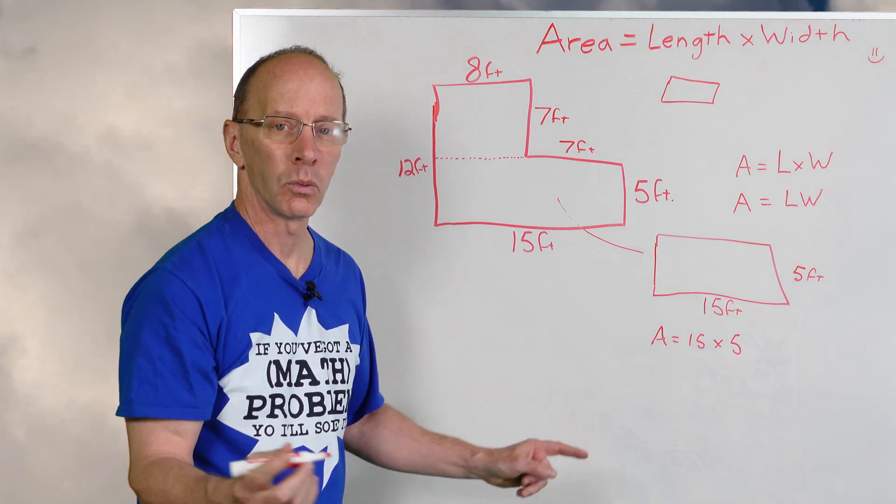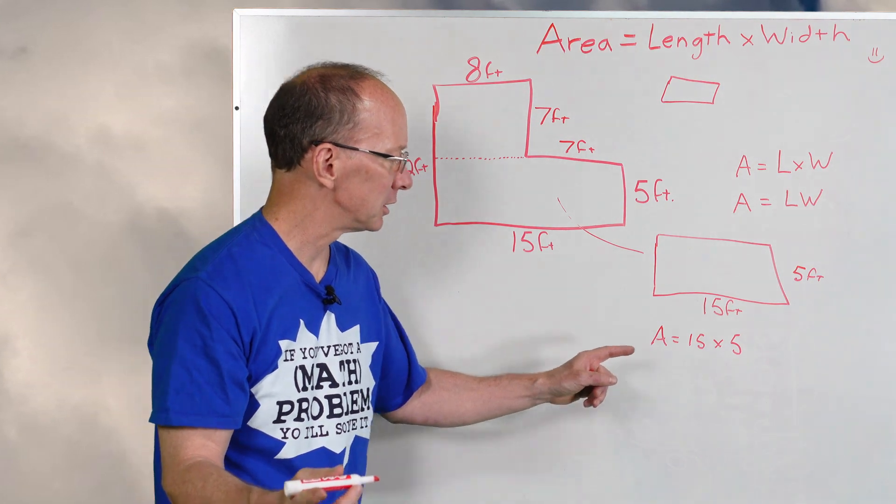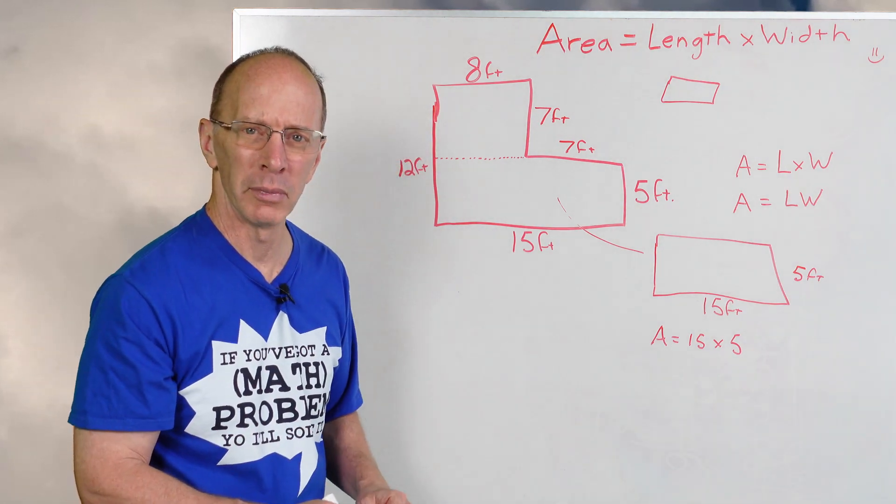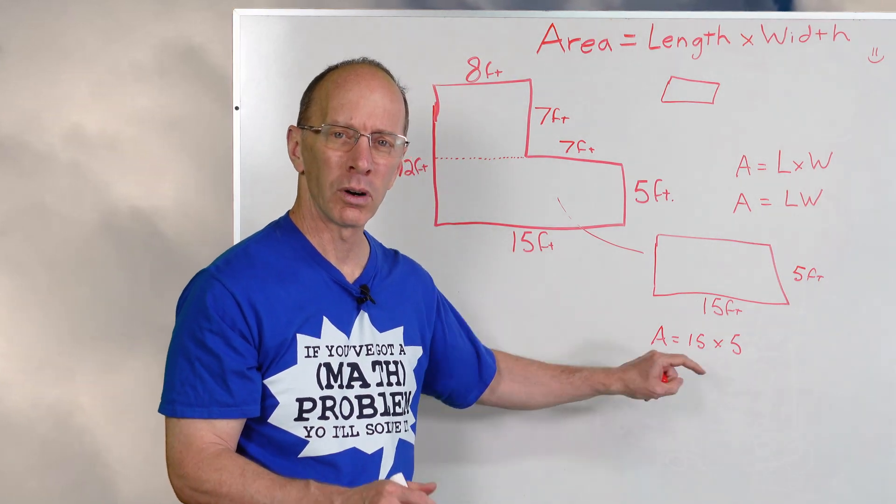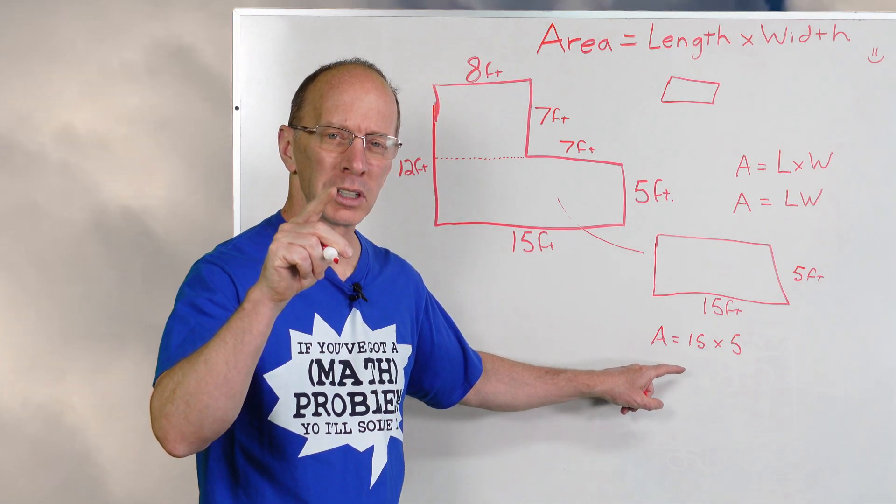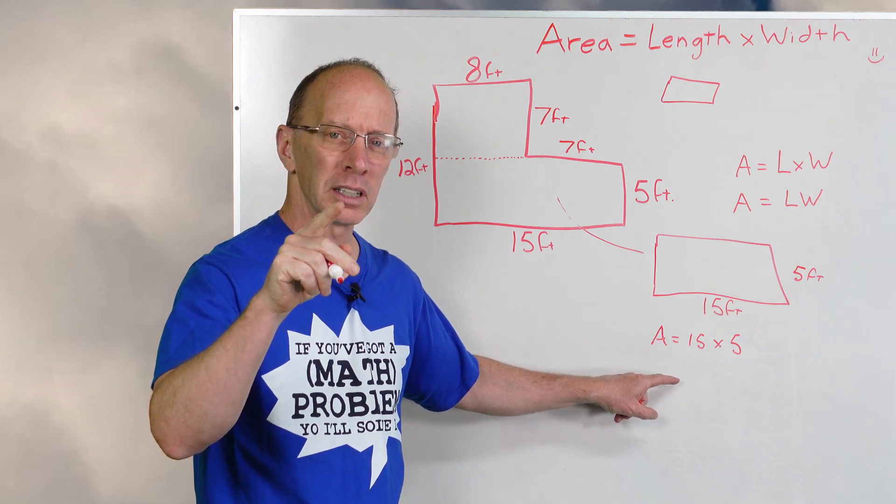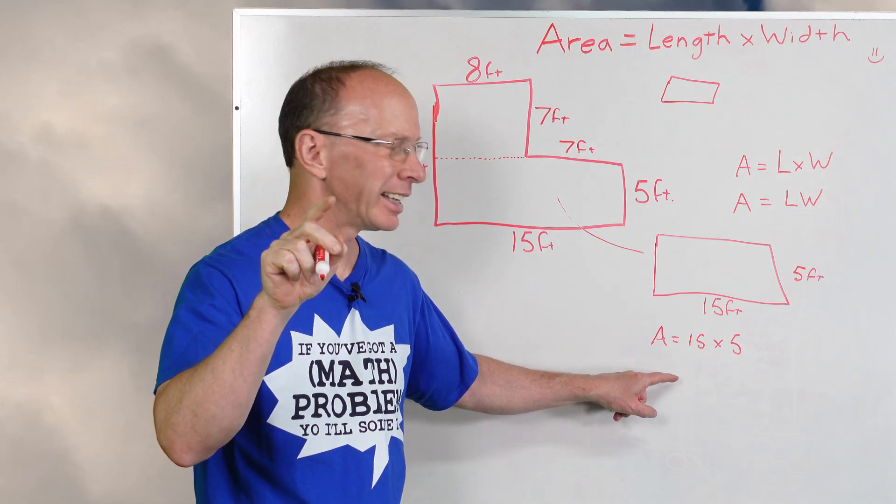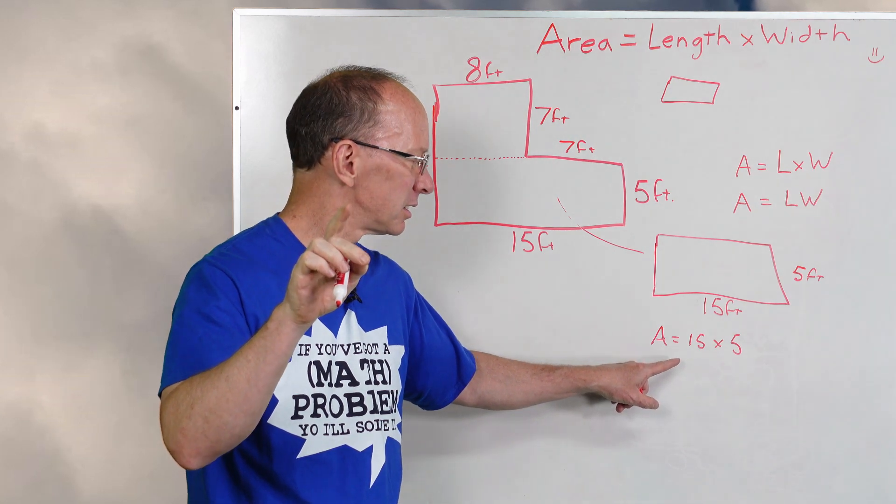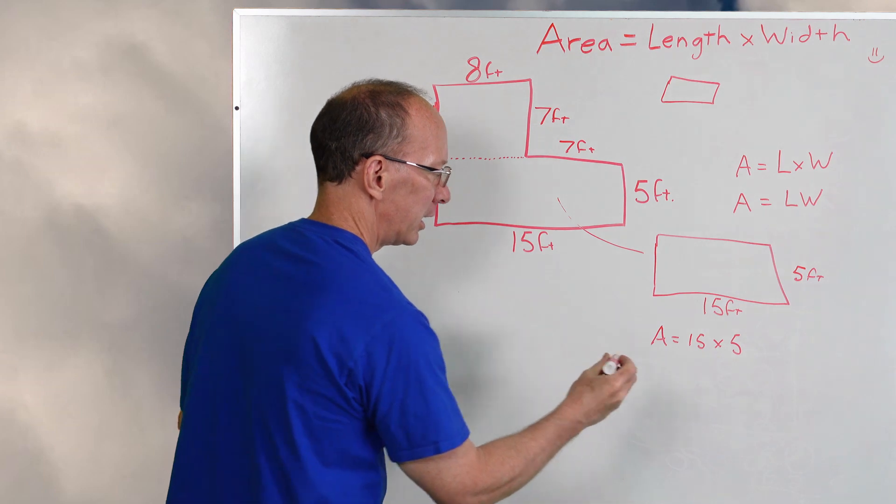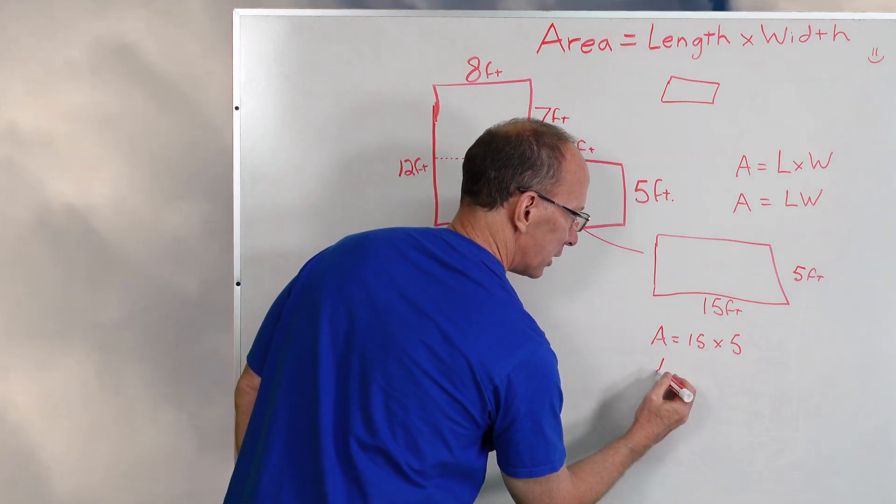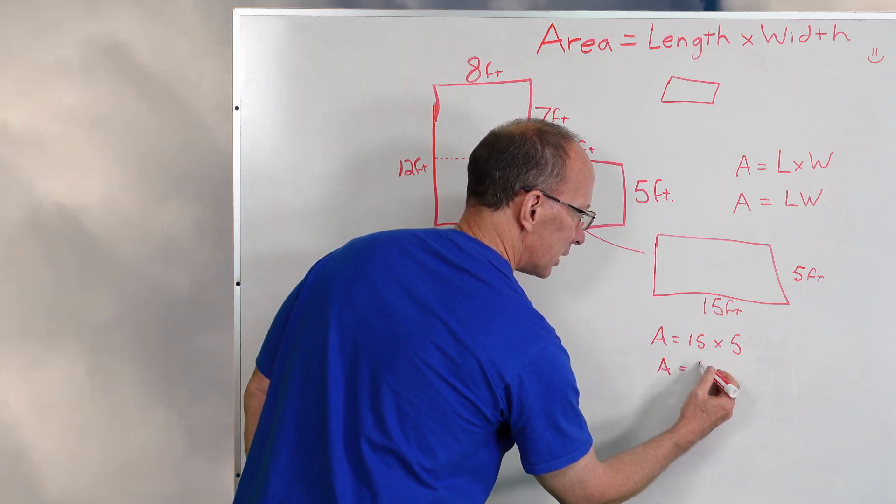So what is 15 times 5? Let me see here. Do you think you can do that with mental math? If I did 15 times 4... let me say, 15 plus 15 is 30, and then 30 plus 30 is 60, and then 60 plus another 15 would be 75. So I'm just going to go ahead and put Area = 75.